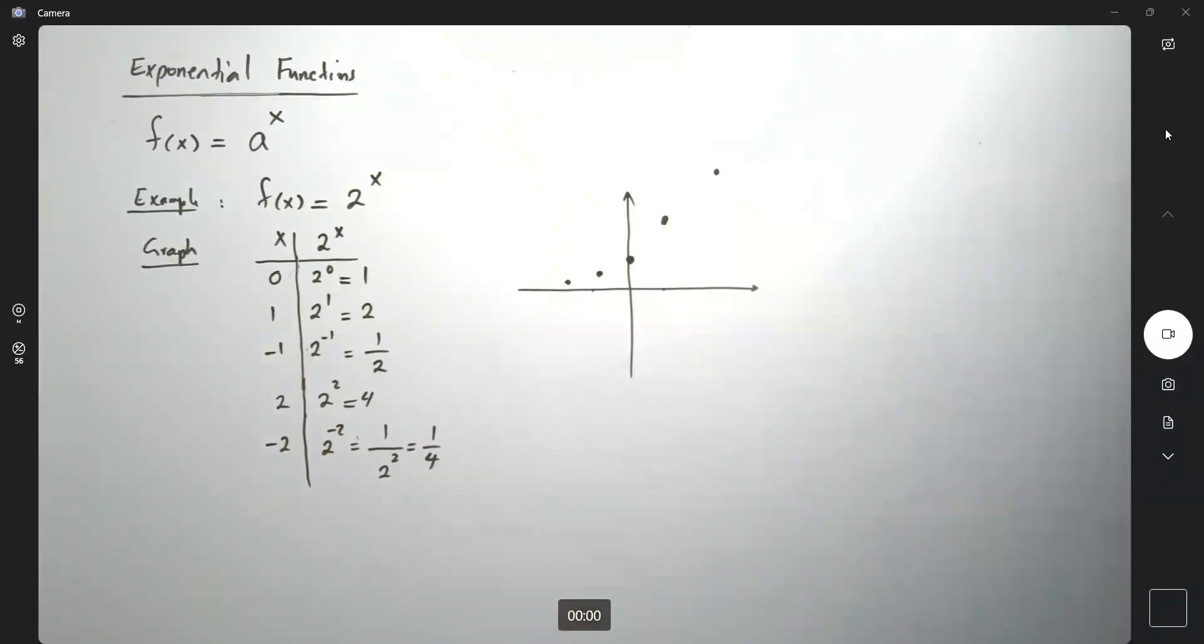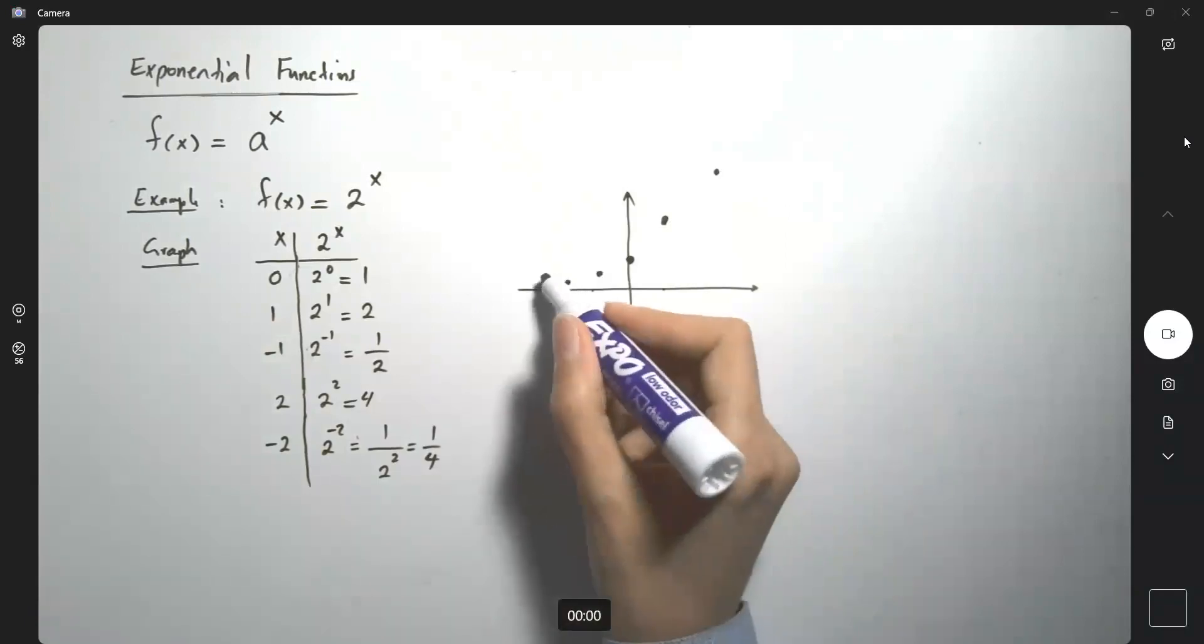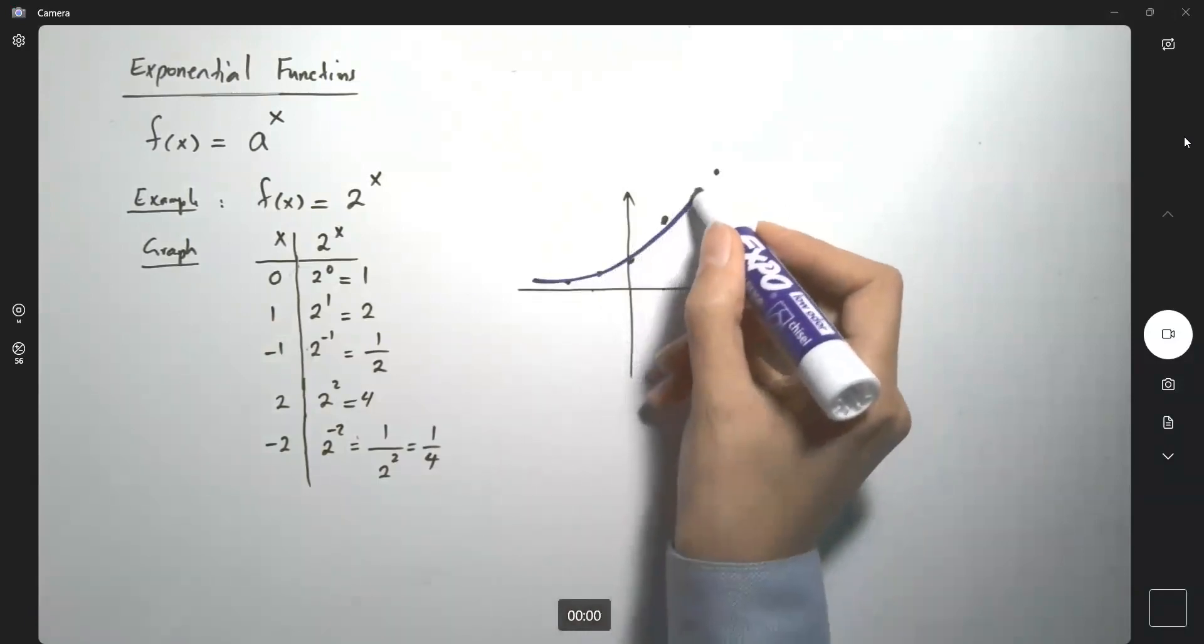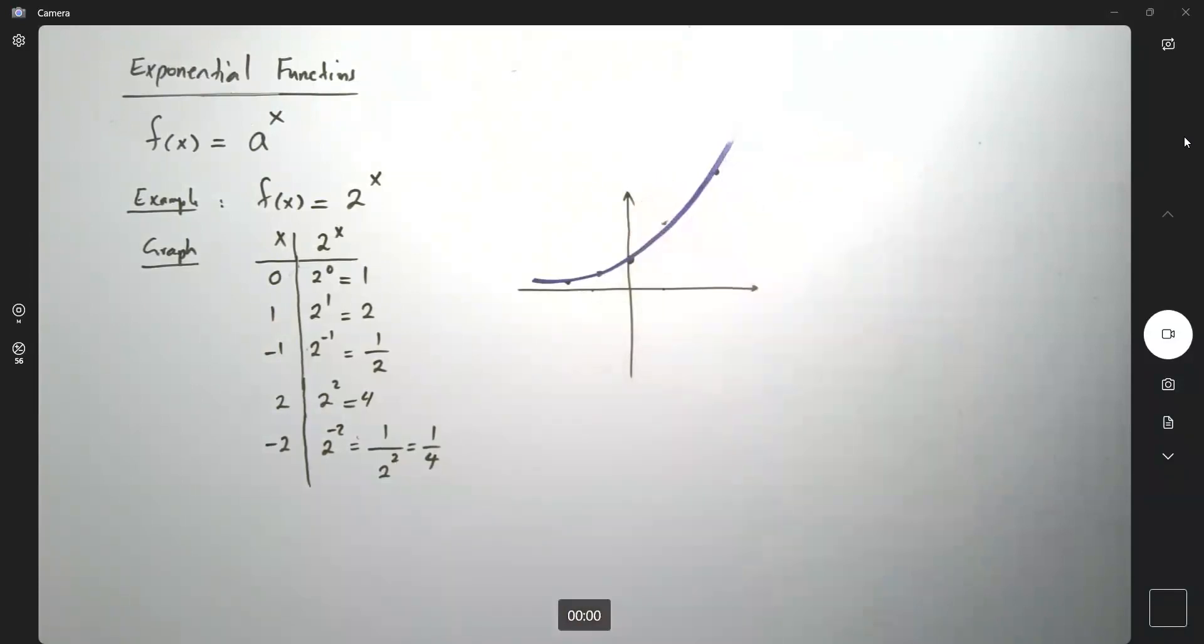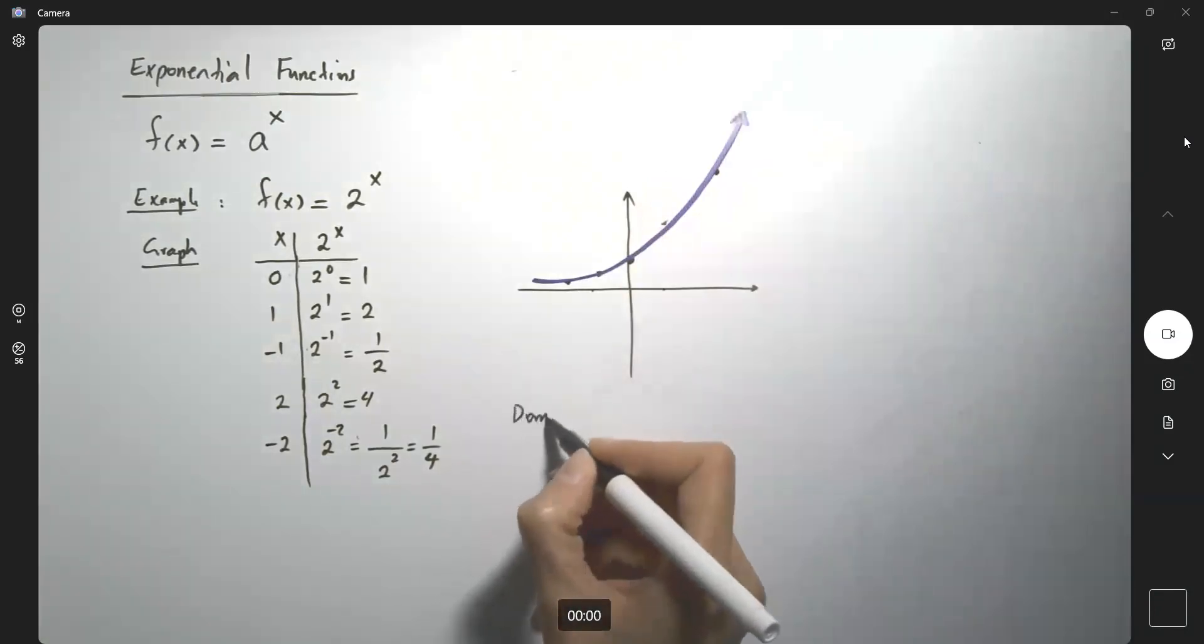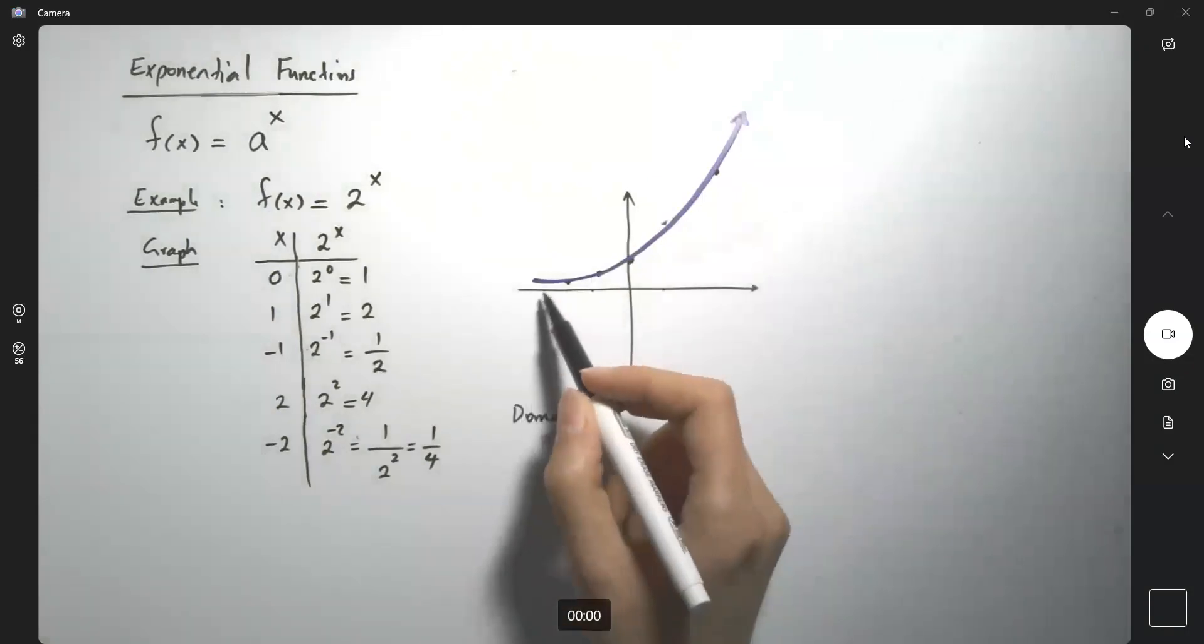So this is the behavior of this function. From left to right, your graph starts increasing and the domain is all real values, all real numbers.